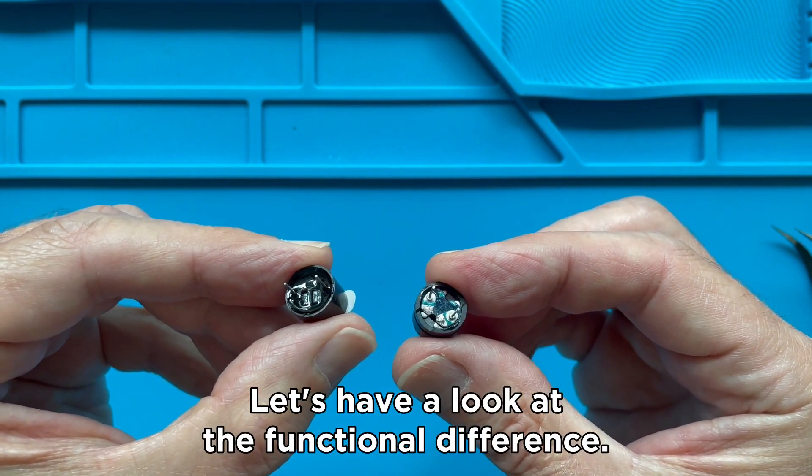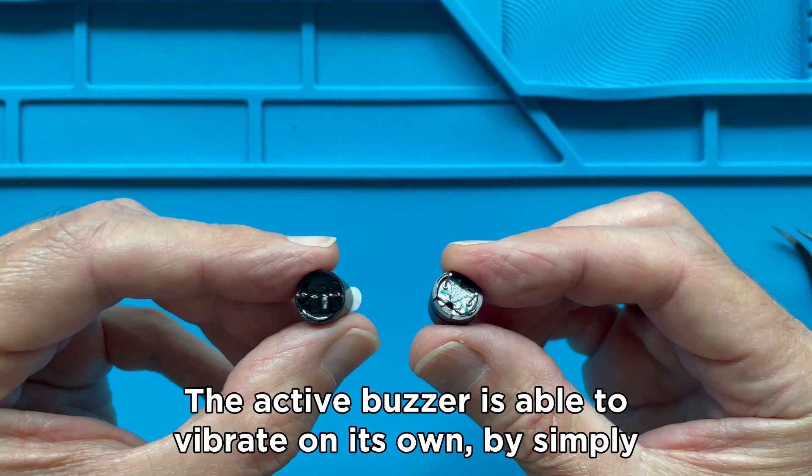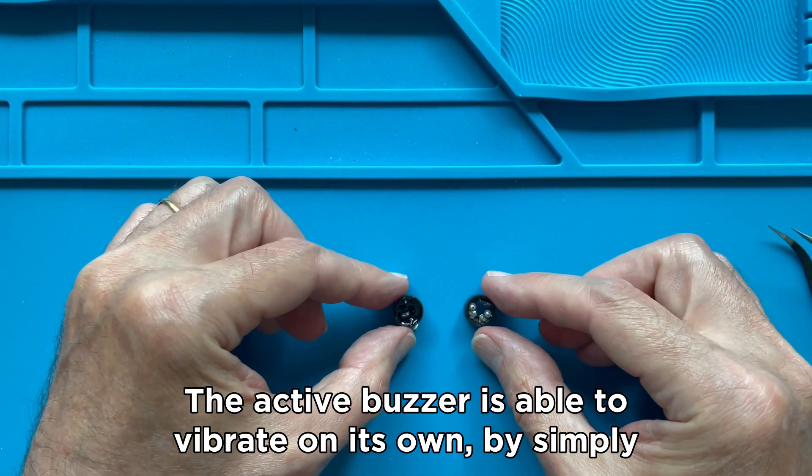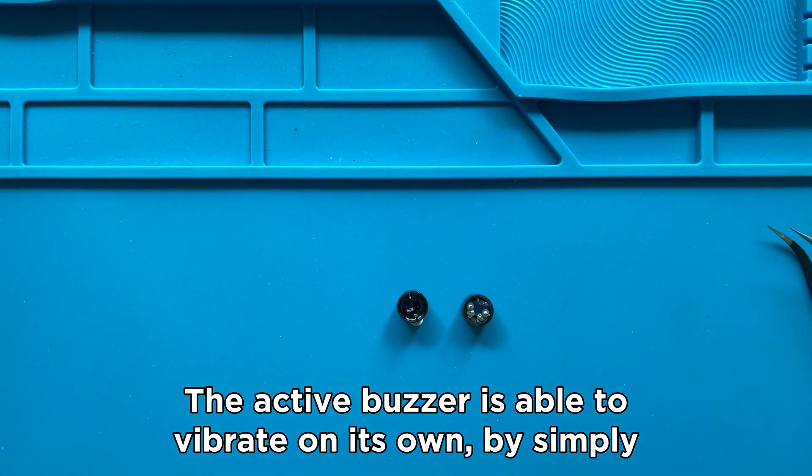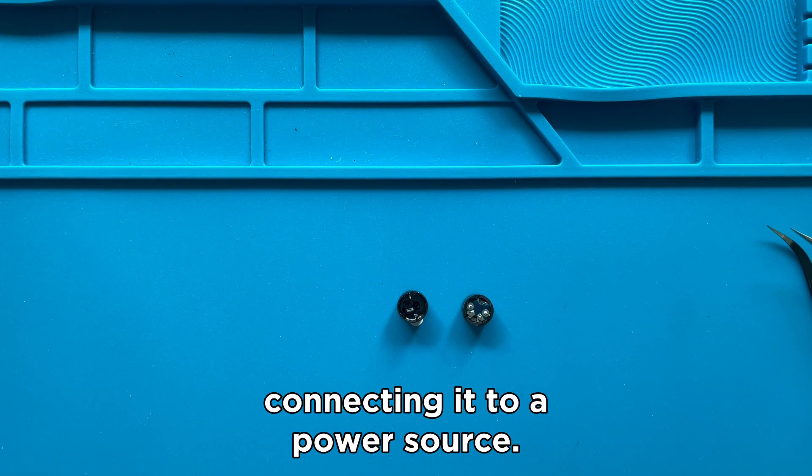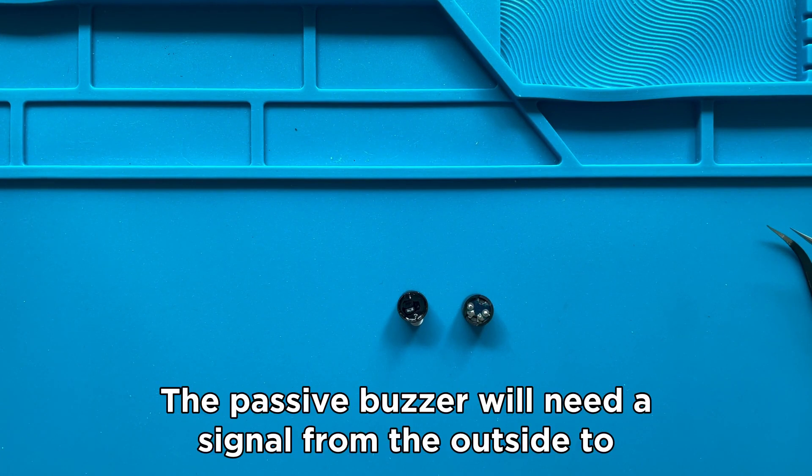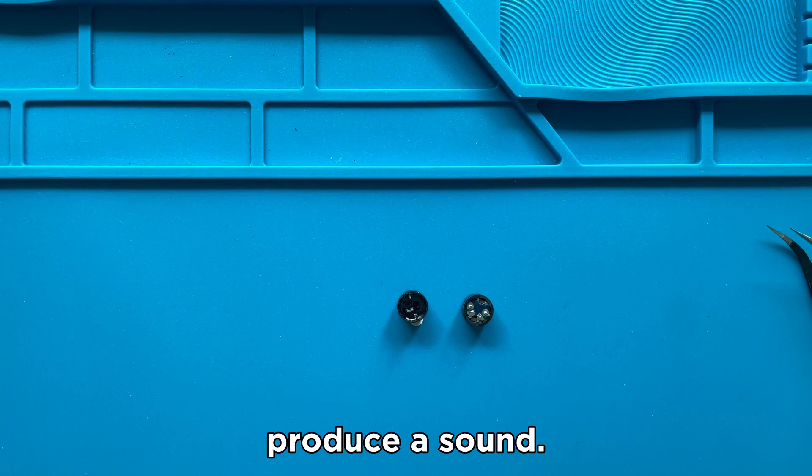Let's have a look at the functional difference. The active buzzer is able to vibrate on its own by simply connecting it to a power source. The passive buzzer will need a signal from the outside to produce a sound.